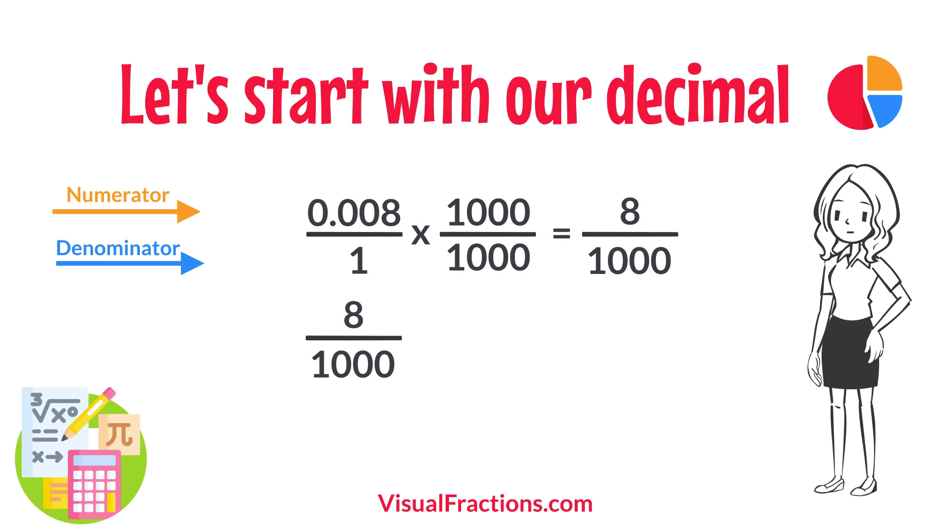Next, we simplify. Both the numerator and the denominator in 8 1,000ths can be divided by 8, the greatest common divisor. Divide 8 by 8 to get 1, and divide 1,000 by 8 to get 125.